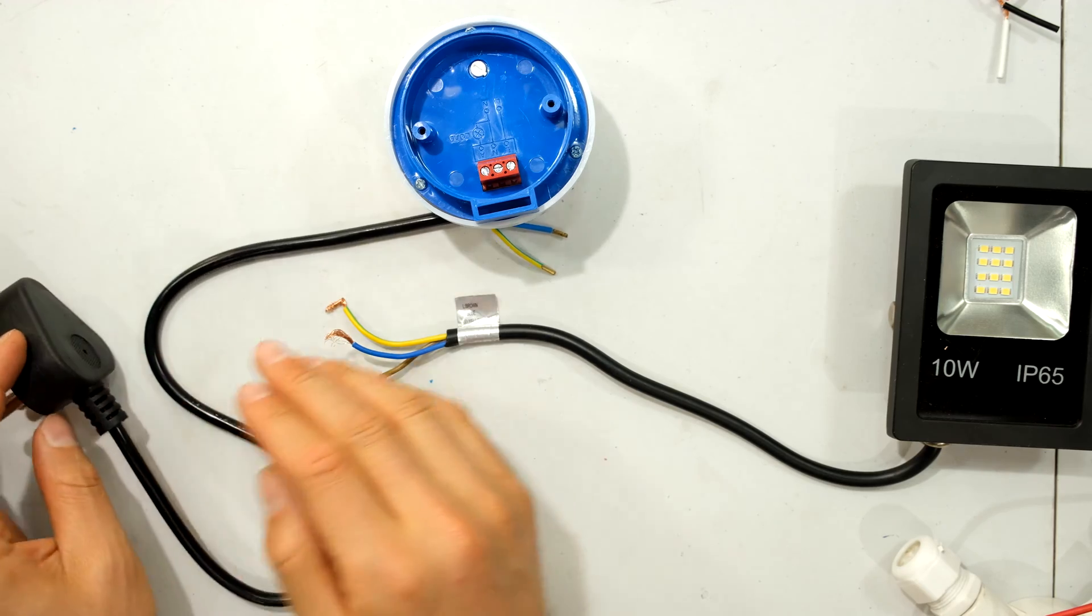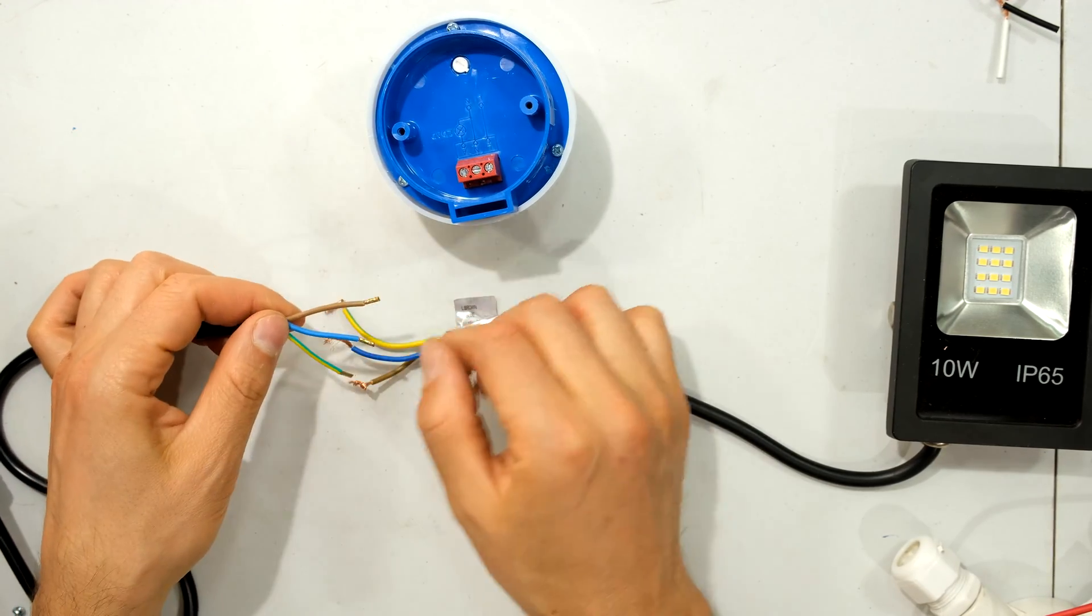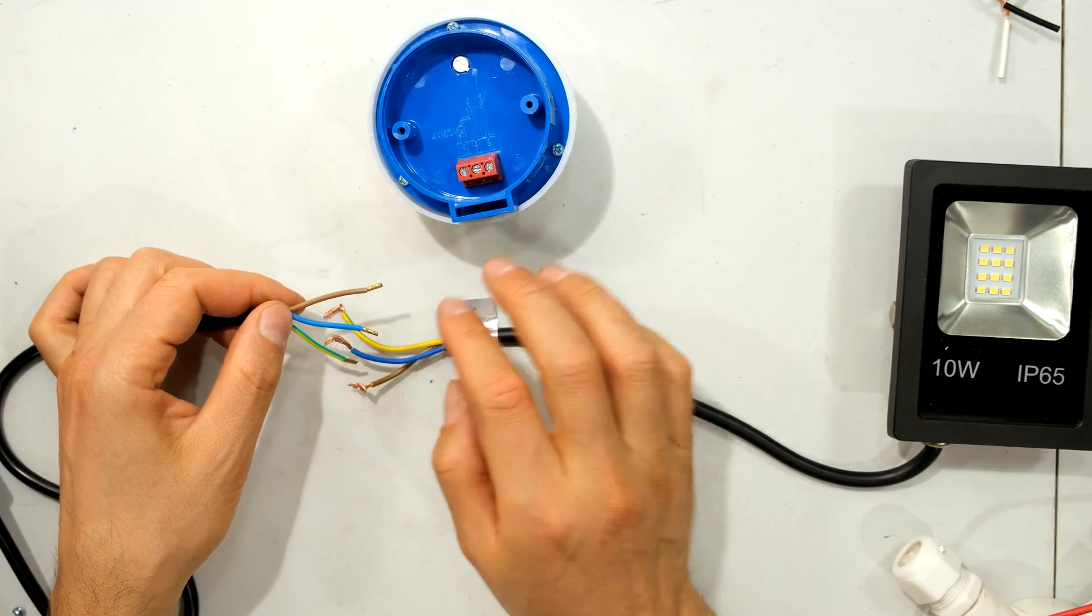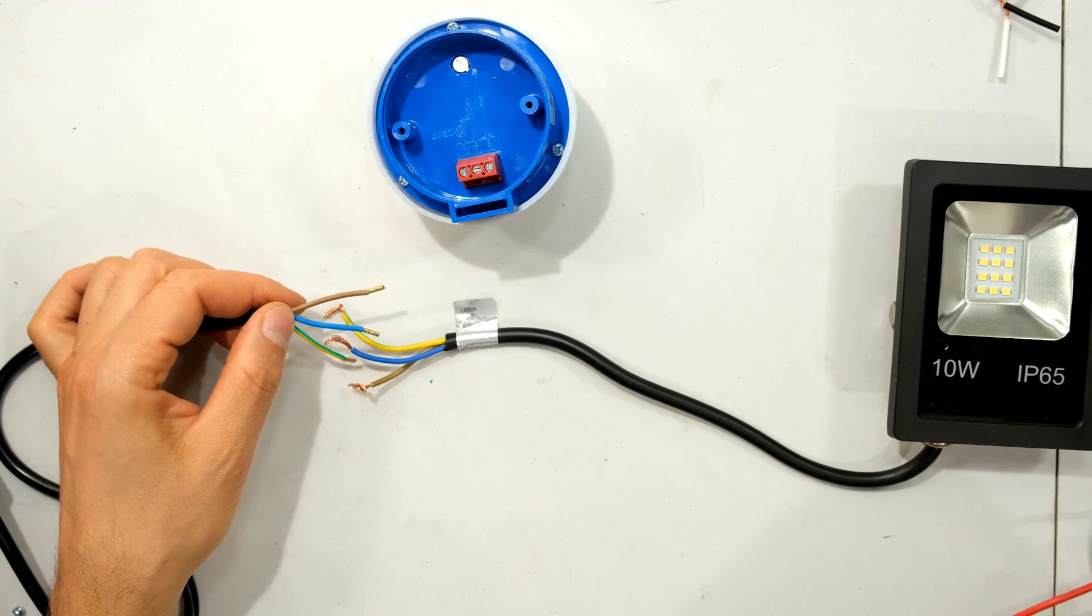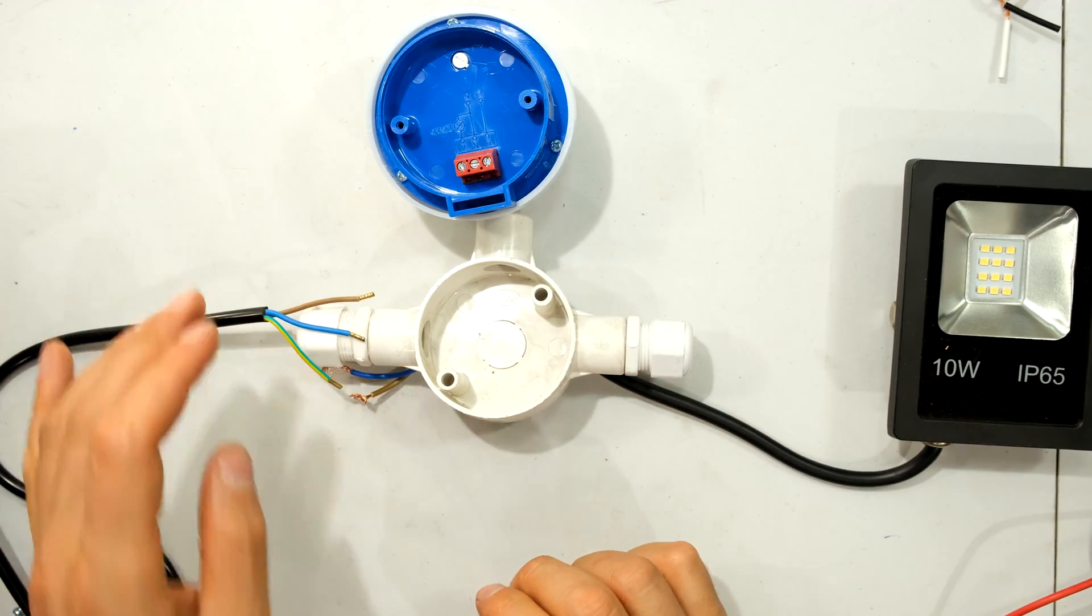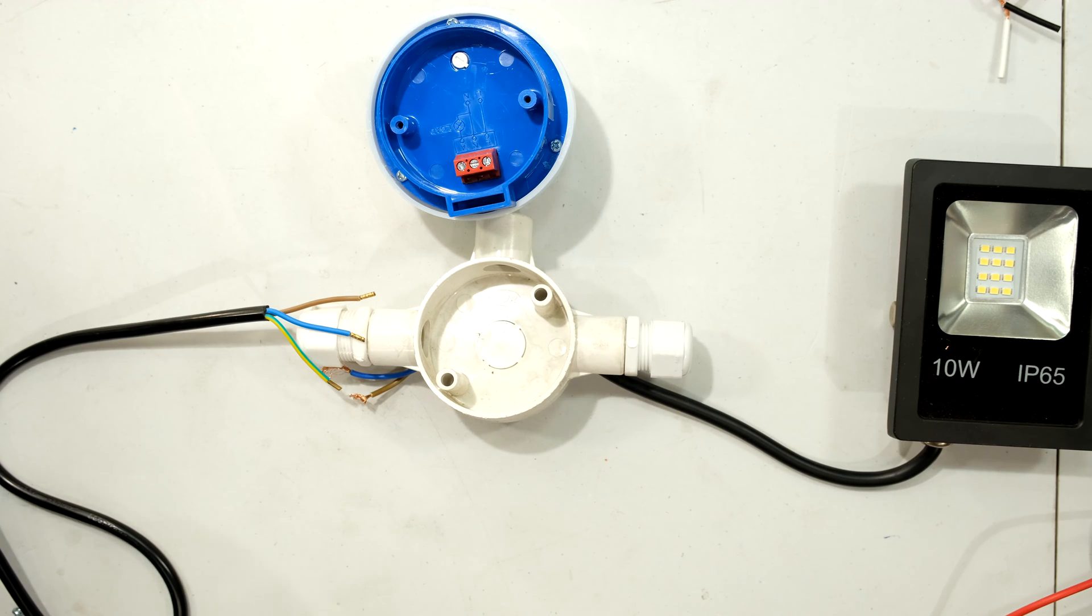Now, if you are following this approach, it's the same principle. You will have a live and a neutral, which will then go into a coupler, which I will also demonstrate. Right. So the point here is we need a live and a neutral from your supply.